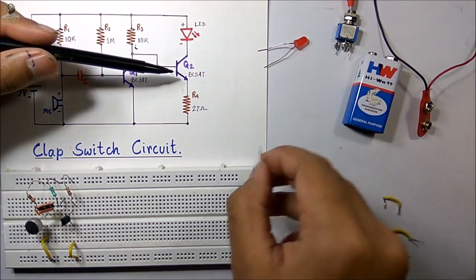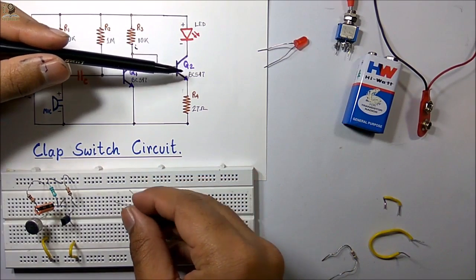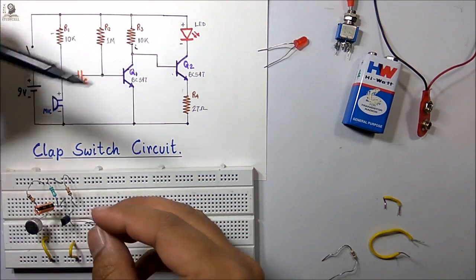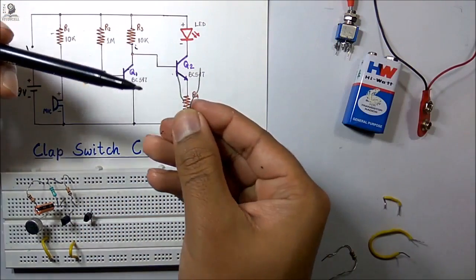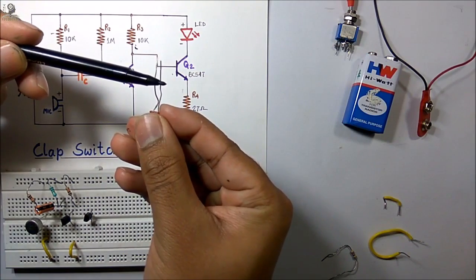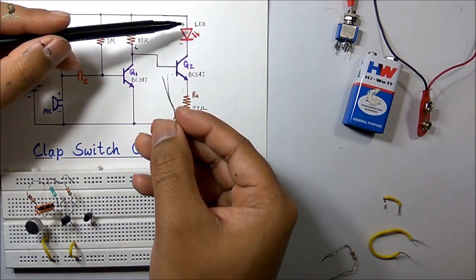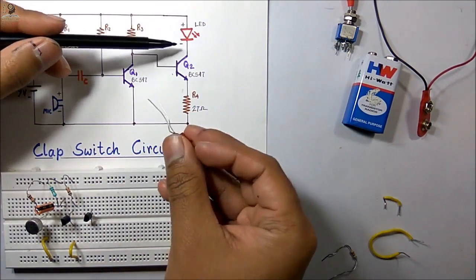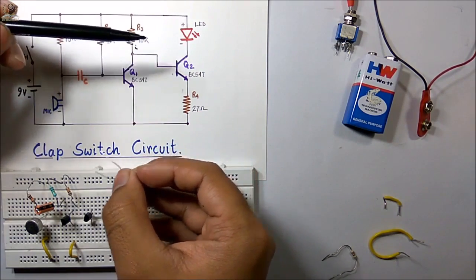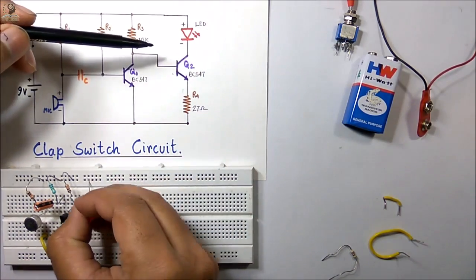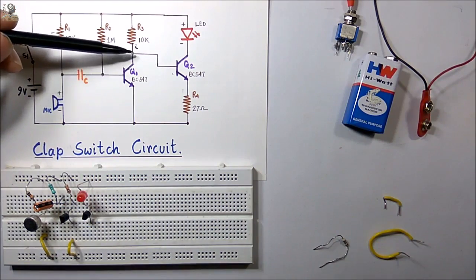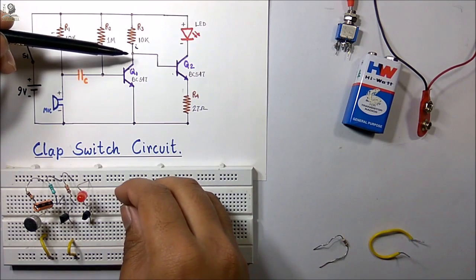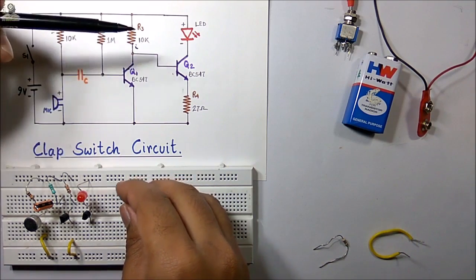Now I have to place the next transistor Q2, also a BC547 transistor. I have to connect the LED — this is the positive terminal of the LED and this is the negative terminal. The positive terminal should go to the positive rail and the negative terminal should go to the collector of the second transistor. Now with the help of a jumper wire I am connecting the collector of the first transistor to the base of the second transistor.